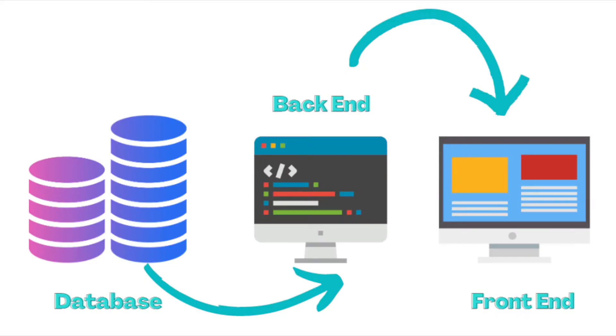Now, covering the next two terms together: back-end or server side, and front-end or client side. Any system usually has three pieces. The first is the database, where the actual data sits. The second is the back-end or server side, which has all the complex logic about what to do with the data. The third is the front-end or client side, which is basically where the visualization is handled.